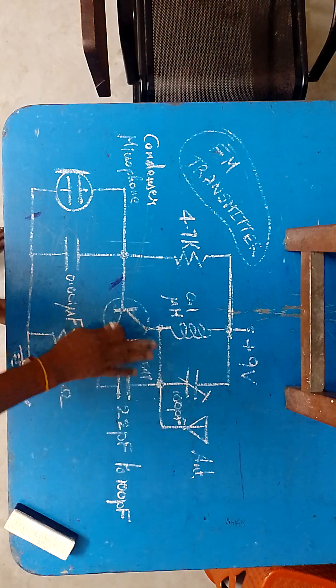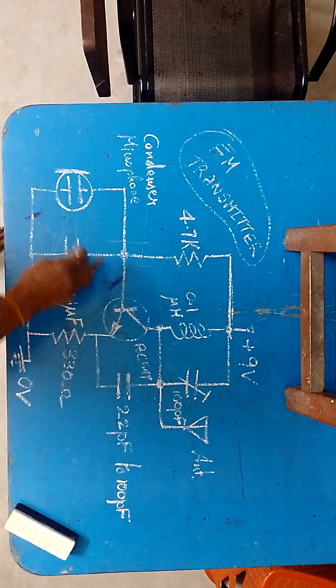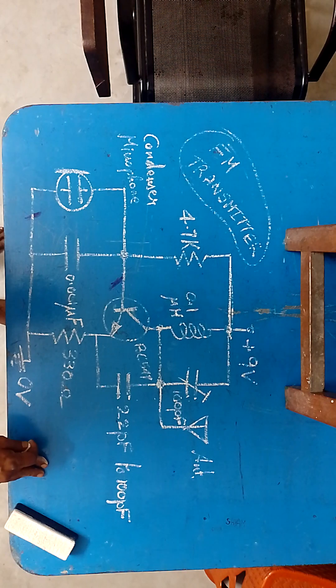So the resonant frequency of this circuit gets modified based on the sound waves. That's why it's called a frequency modulated transmitter.